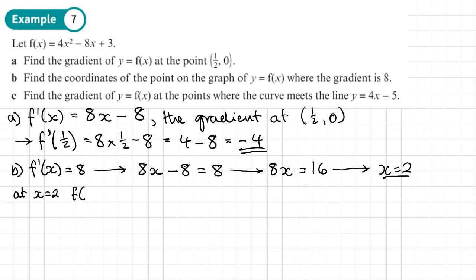So at x equals 2, f of x or f of 2 equals 4 times by 2 squared minus 8 times by 2 plus 3. So what's that going to give us? 4 times 4, which is 16. Minus 8 times 2, so minus 16 plus 3. So that just gives us a y coordinate of 3. So the final coordinate answer is going to be 2, 3.